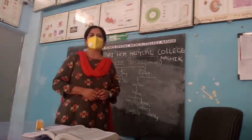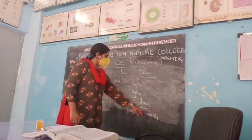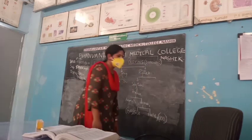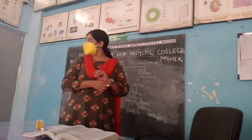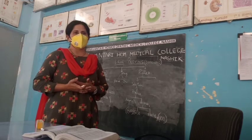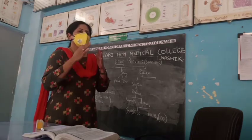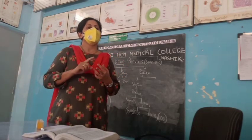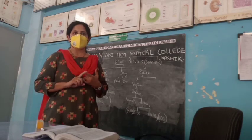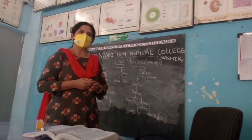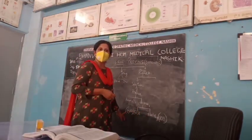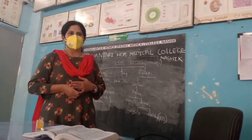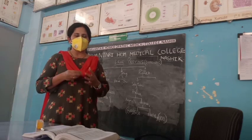Healthy persons are used for proving, as given in aphorism 108. The advantage of taking a healthy person is we get everything — all symptoms from mentals to subjective symptoms to peculiar characteristic individualizing symptoms, all PQRS symptoms — which we do not get from animals. That is why we choose a healthy person.